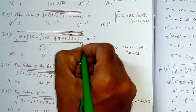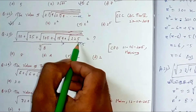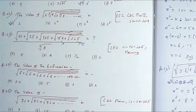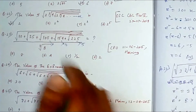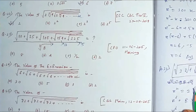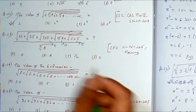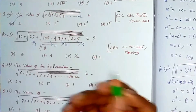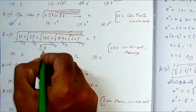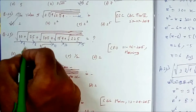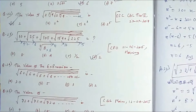Working from the innermost radical outward: √225 = 15; then √(154+15) = √169 = 13; then √(108+13) = √121 = 11; then √(25+11) = √36 = 6; then √(10+6) = √16 = 4. So the numerator is 4. The denominator is ∛8 = 2. Therefore 4÷2 = 2, which is option D. These problems look difficult but can be solved quickly!